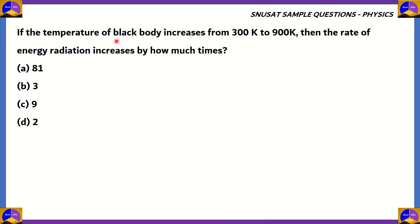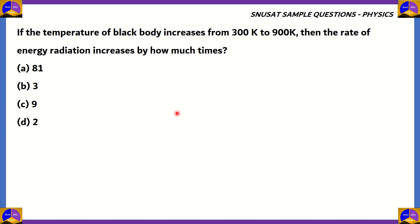If the temperature of a black body increases from 300 degrees Kelvin to 900 degrees Kelvin, then the rate of energy radiation increases by how many times? The options are 81, 3, 9, or 2.